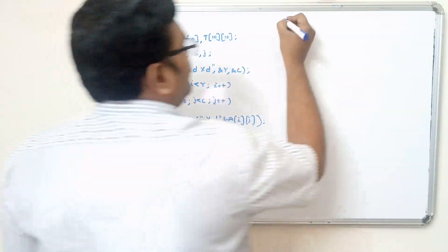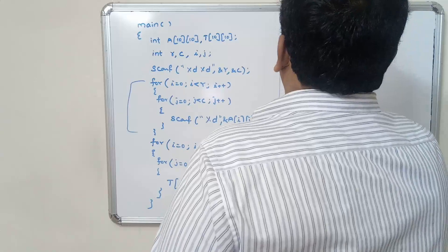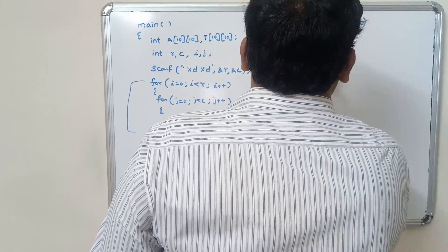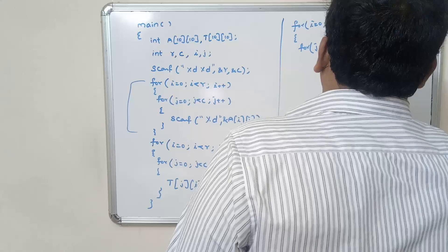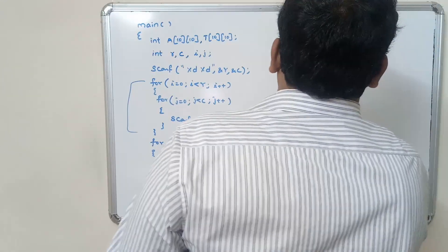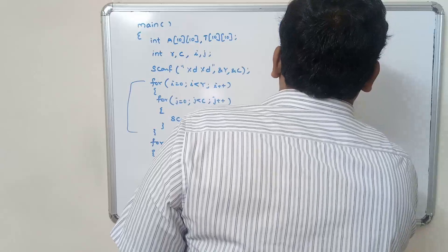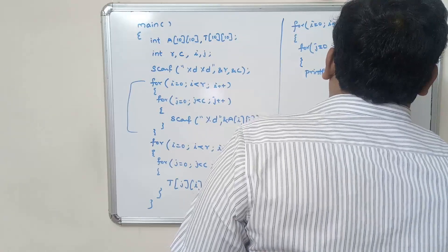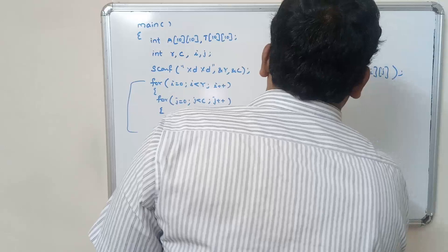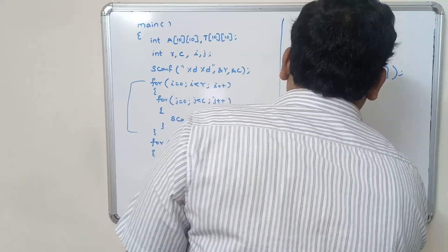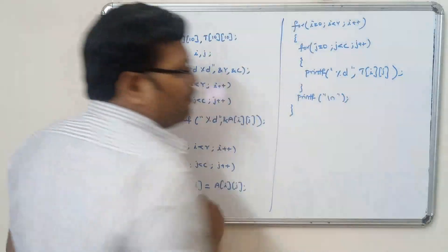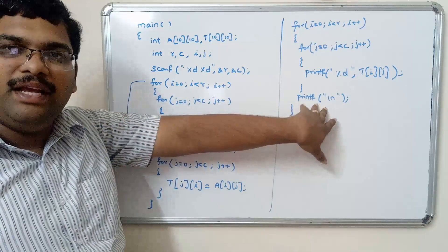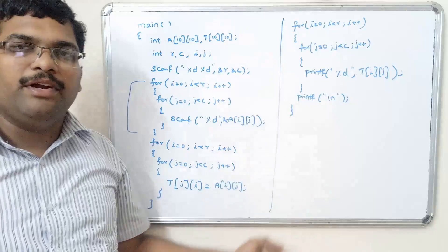After assigning to the transpose matrix, we print it. Again, for i = 0, i less than rows, i++ — for j = 0, j less than columns, j++ — and printf("%d", transpose[i][j]). We also add a printf("\n") after every row so that the output is formatted correctly — after every row, it moves to the next line.